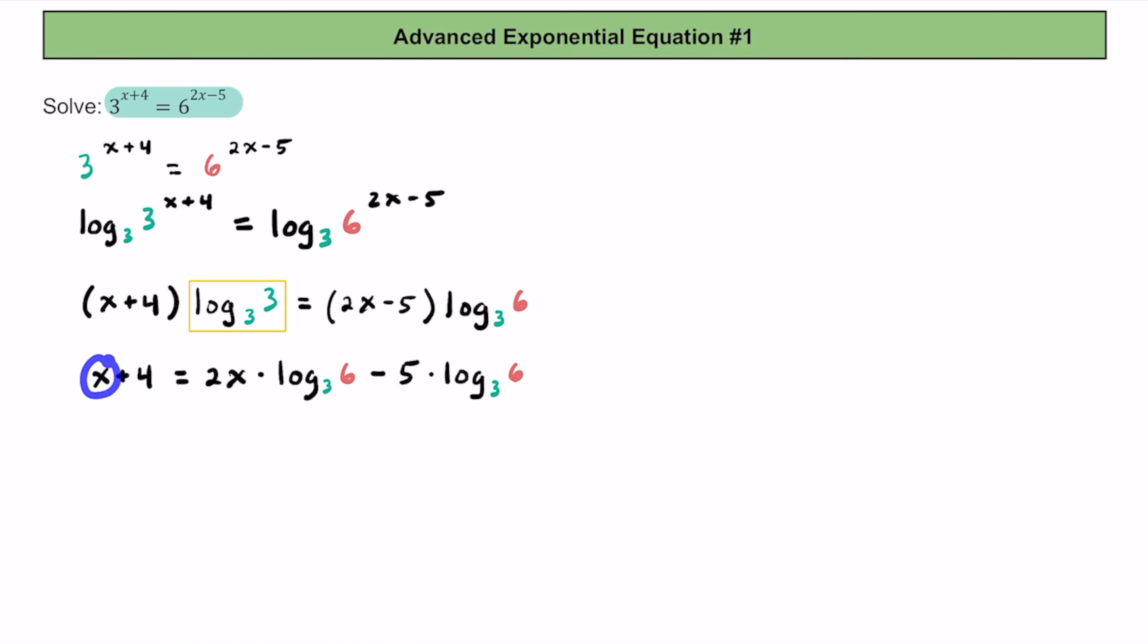Notice that we have an x on the left side of the equation as well as on the right side of the equation. So let's try to get those together. First, I'm going to subtract 4 from both sides of the equation so that we can get rid of that. By subtracting 4 from both sides, we can say that we have x is equal to 2x times log base 3 of 6, minus 5 times this log base 3 of 6 again, and then we're going to have a minus 4 at the end.